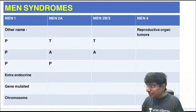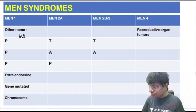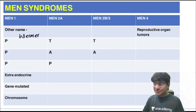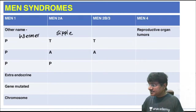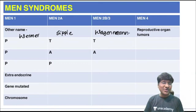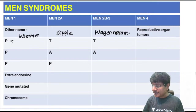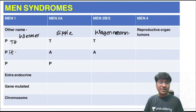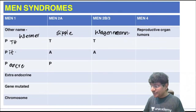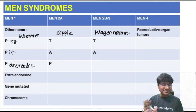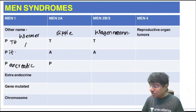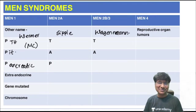MEN syndromes overview: MEN-1 is also called Wermer syndrome. MEN-2A is called Sipple syndrome. MEN-2B (MEN-3) is called Wagenmann-Frobose syndrome. MEN-1 tumors include parathyroid adenoma/hyperplasia, pituitary adenoma/hyperplasia, and pancreatic adenoma/hyperplasia. Most common is parathyroid tumors. The mutated gene is MEN1 on chromosome 11.